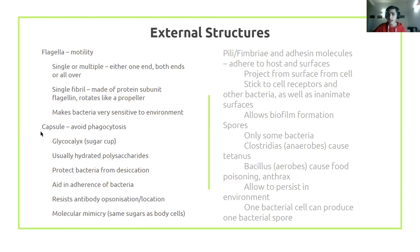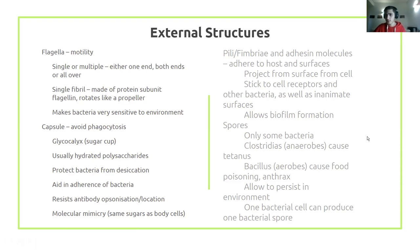Bacteria also have pili or fimbriae, which are molecules used to adhere to surfaces. Some bacteria form spores — dormant forms that can reactivate later, allowing the bacteria to survive longer. Importantly, it's a one-to-one relationship: one bacterial cell creates one spore.